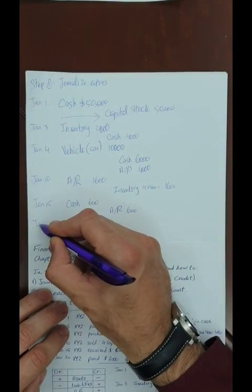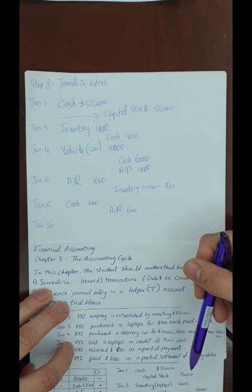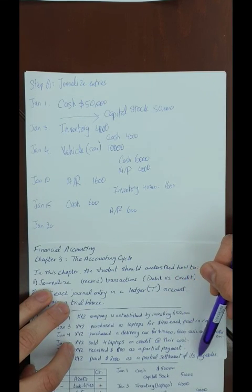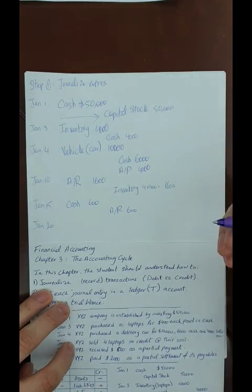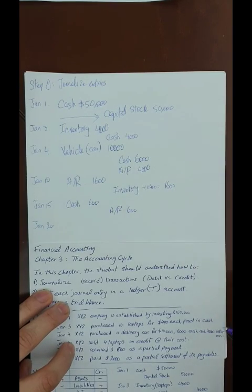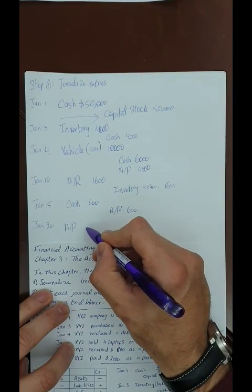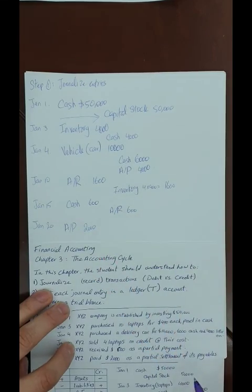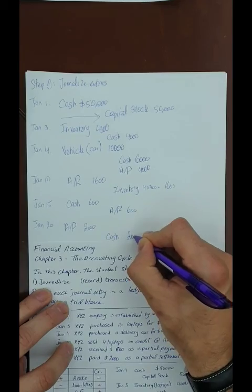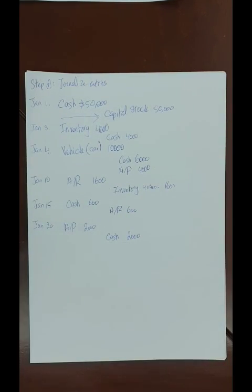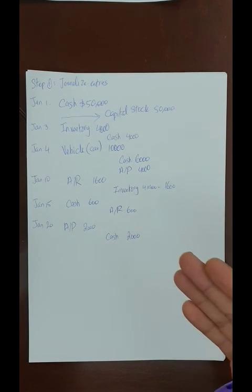Jan 20 — paid $2,000 as a partial settlement of payables. Cash is declining and accounts payable is declining. To decrease liabilities, I use a debit. DR Accounts Payable $2,000, CR Cash $2,000. This completes the journalizing of all six economic transactions in accounting language. We now move to step two.